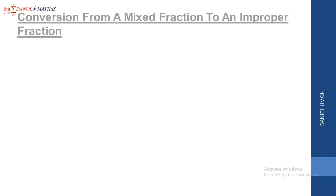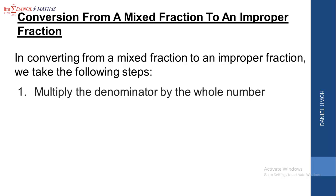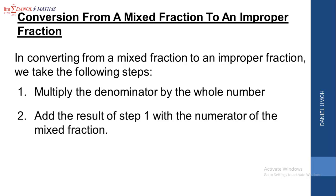Now let's advance and look at conversion from a mixed fraction to an improper fraction. There are some steps we need to follow. Please pay keen attention as we explain this. In converting from a mixed fraction to an improper fraction, we take the following steps. Step 1: we multiply the denominator by the whole number. Step 2: we are going to add the result of step 1 with the numerator of the mixed fraction.